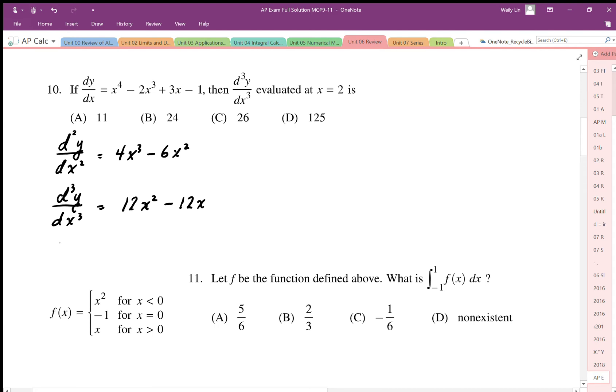And I want to then evaluate this expression when x is equal to 2. So I'm just going to plug in x equals 2. I end up with 12 times 4 minus 12 times 2. And that's going to give me a value of looks like 24. So my answer is b.